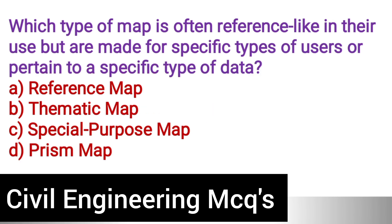Next question: Which type of map is often referenced in use but is made for specific types of uses or pertinent to specific types of data? Option A: Reference map. Option B: Thematic map. Option C: Special purpose map. Option D: Prism map. The correct answer is option C, special purpose map.